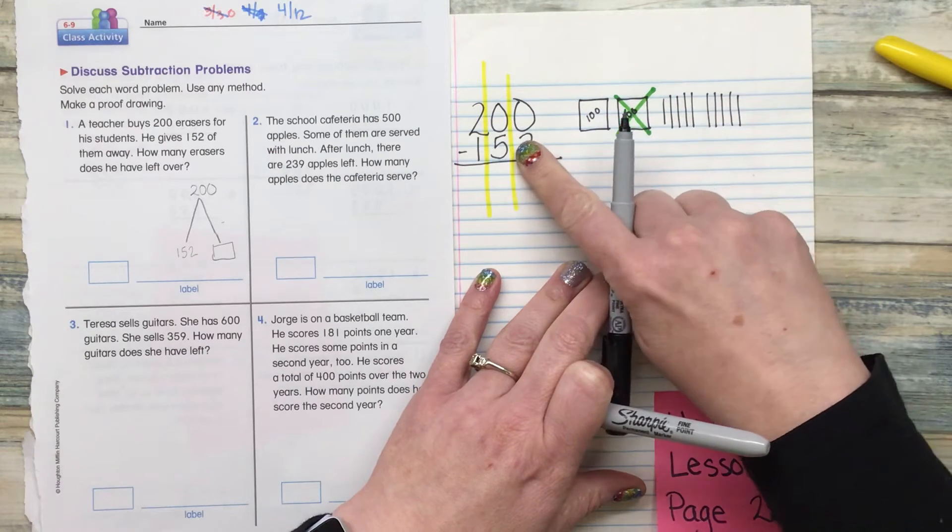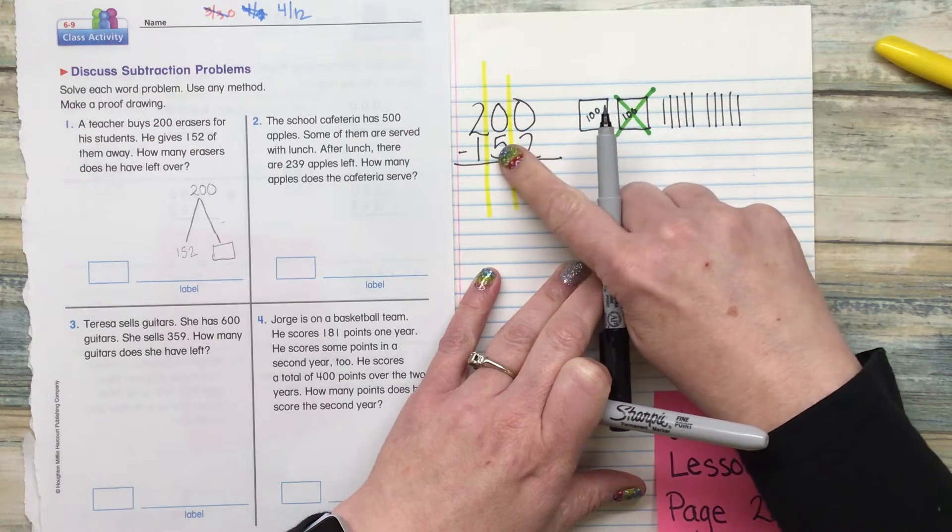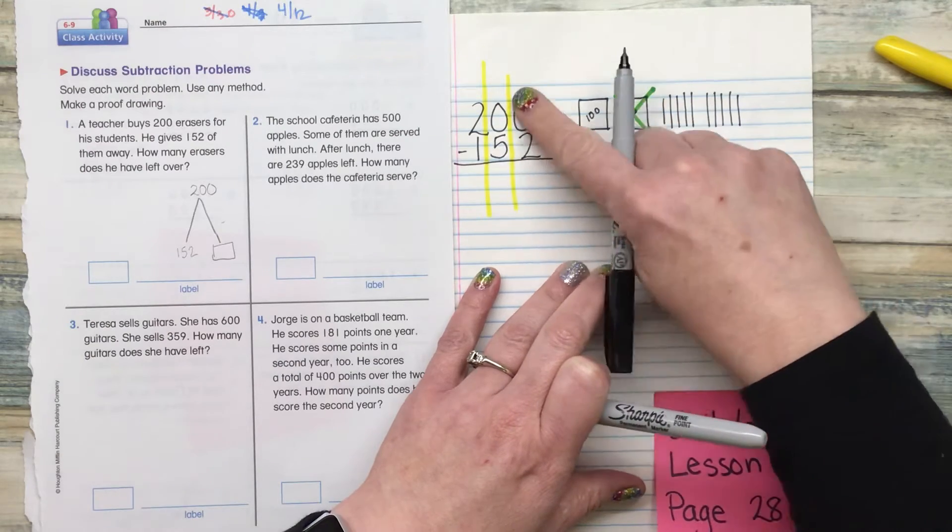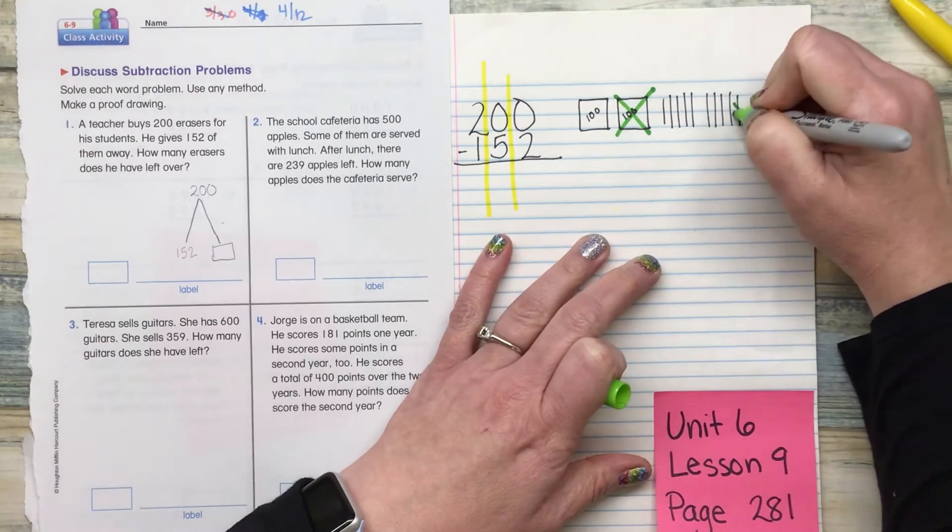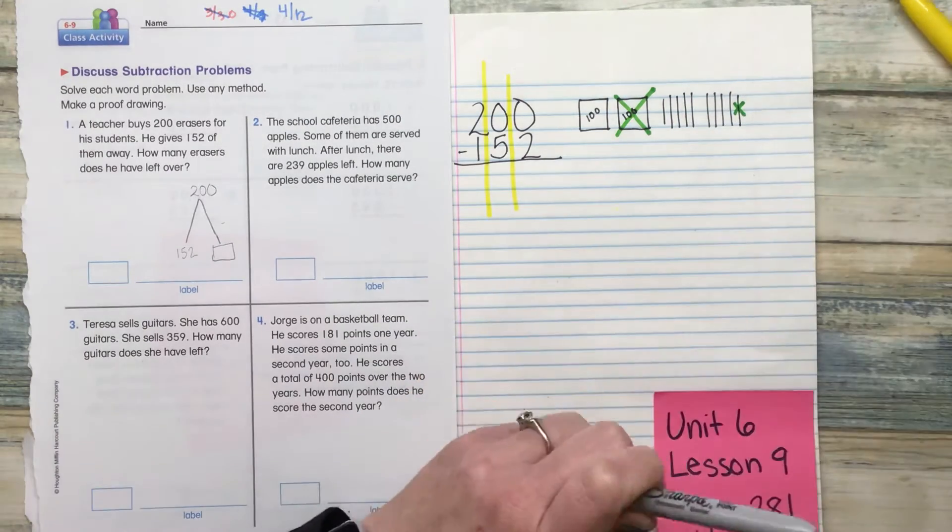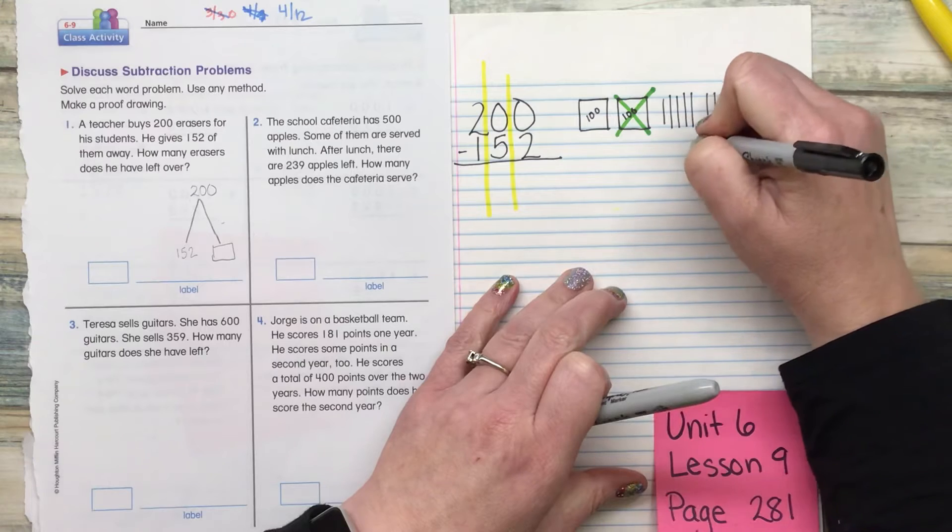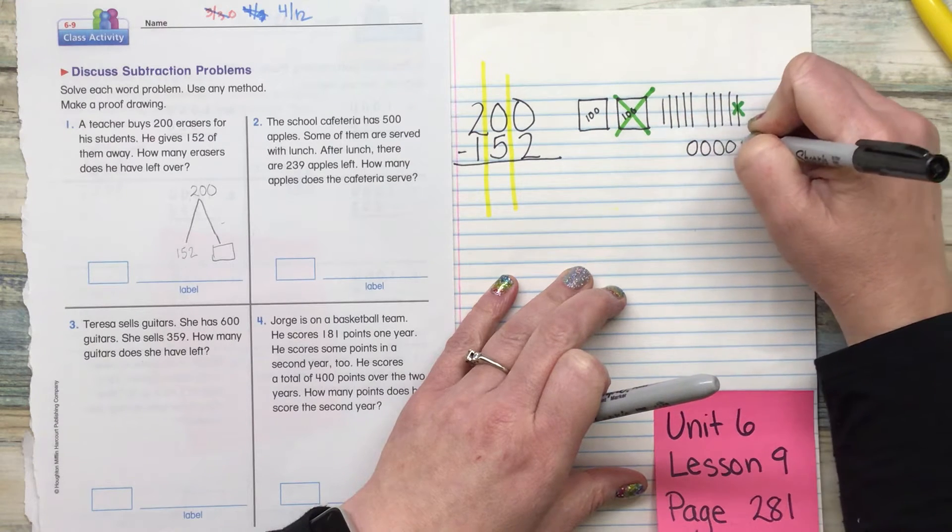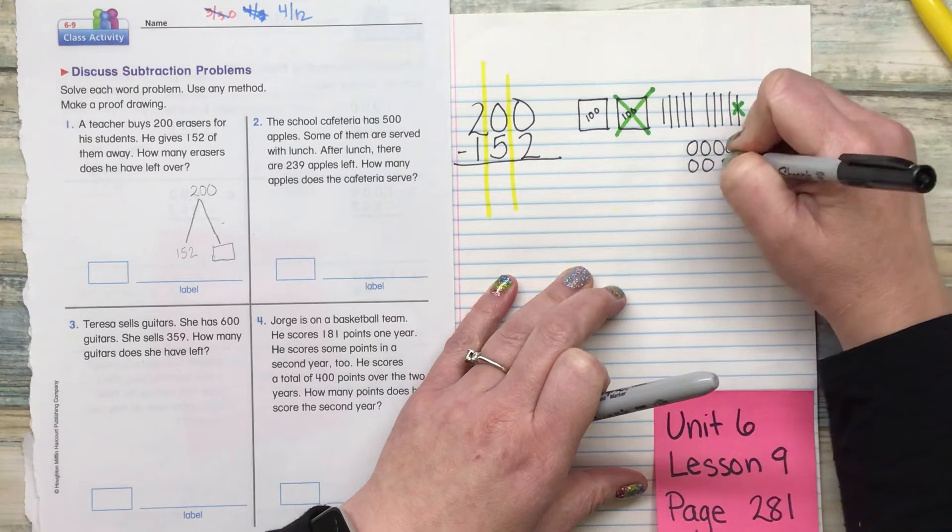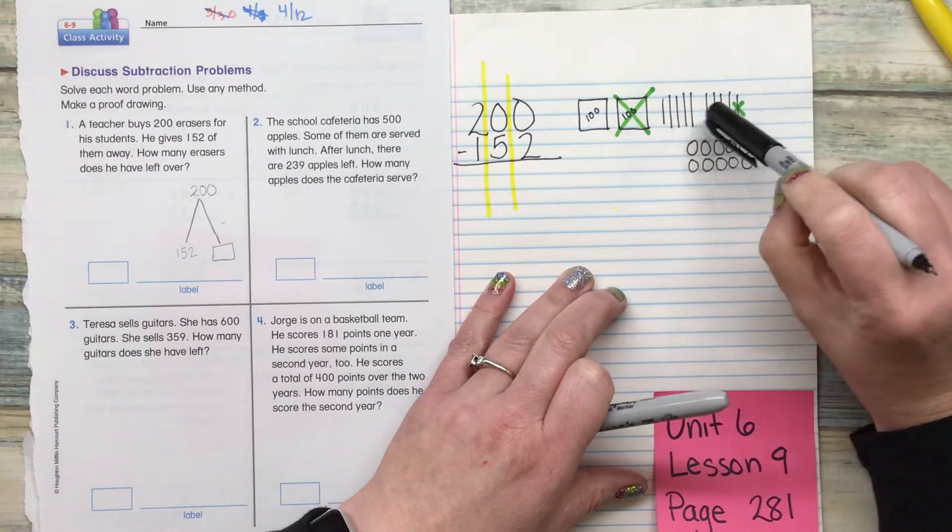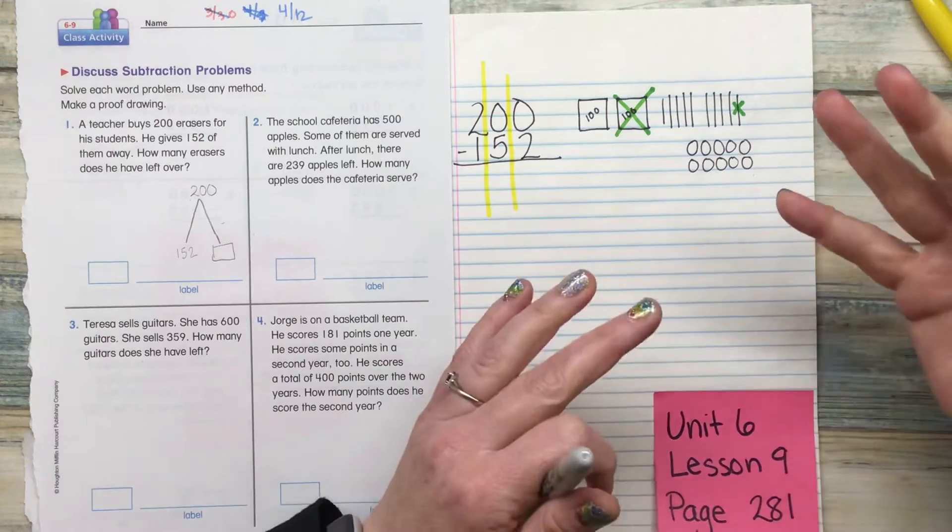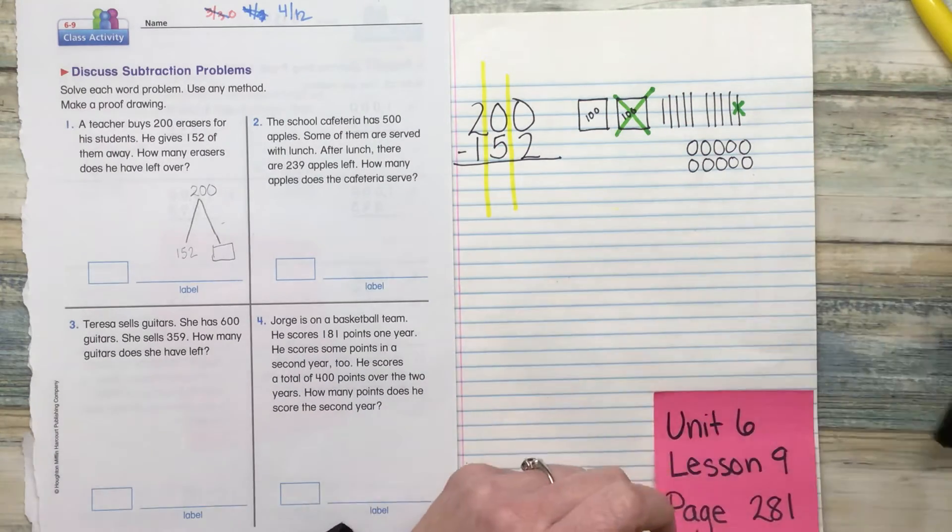But I also know that I'm going to need to break apart one of the tens into ones because I can't subtract two from zero. So I'm going to X one of those out. And now I'll draw 10 ones. And notice that I did divide them into groups of five, so it's easier for me to figure out what's going on.